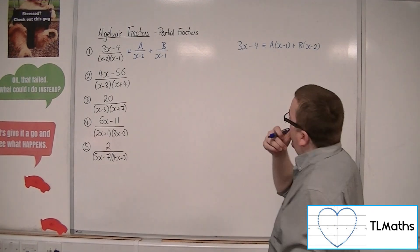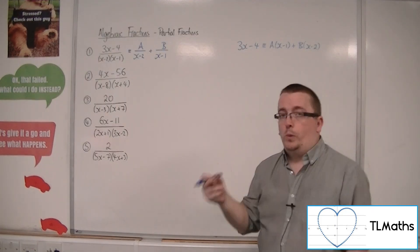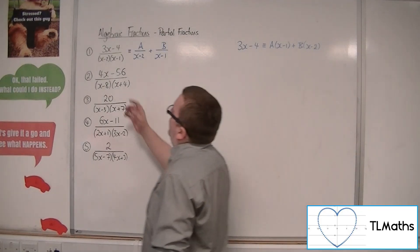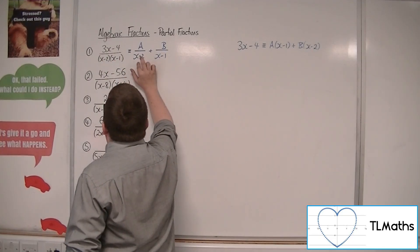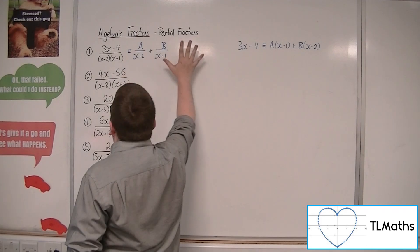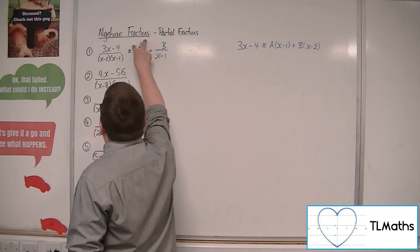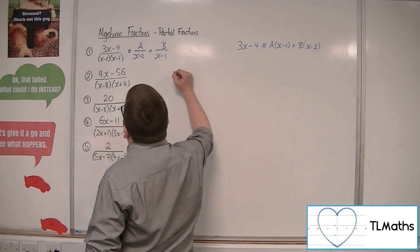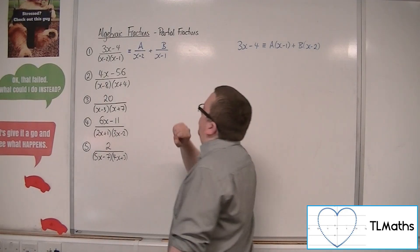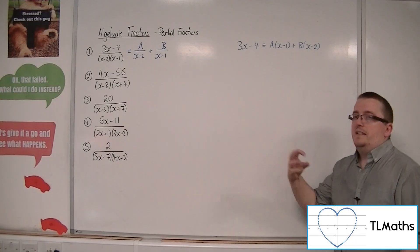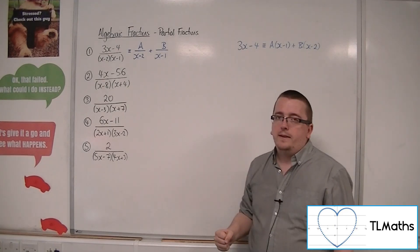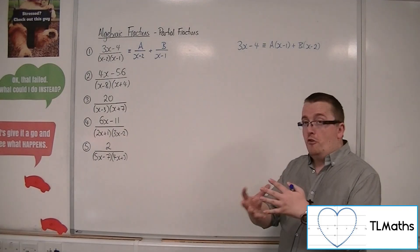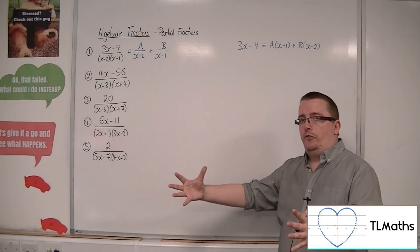You want to learn to get from that line to that line quickly. Effectively, each term loses its denominator but gains what it doesn't have. The A term doesn't have an (x - 1), so it becomes A(x - 1). The B term gains what it doesn't have, which is (x - 2). That's why (x - 2) is next to the B.